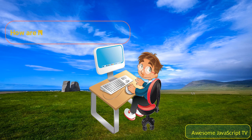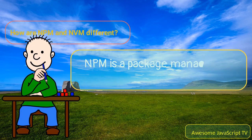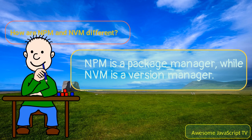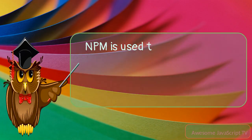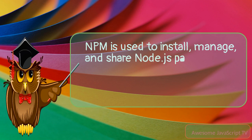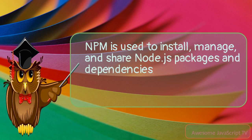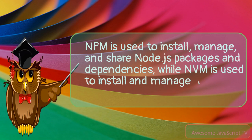How are NPM and NVM different? NPM is a package manager, while NVM is a version manager. NPM is used to install, manage, and share Node.js packages and dependencies, while NVM is used to install and manage multiple versions of Node.js.